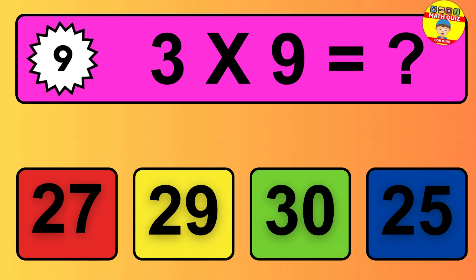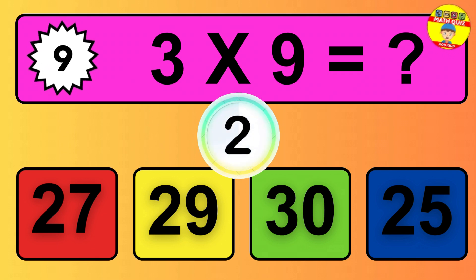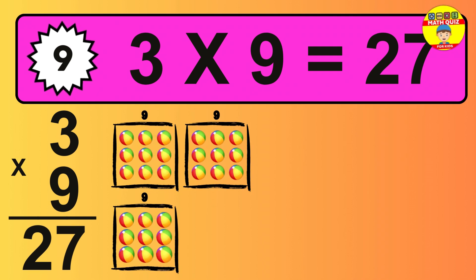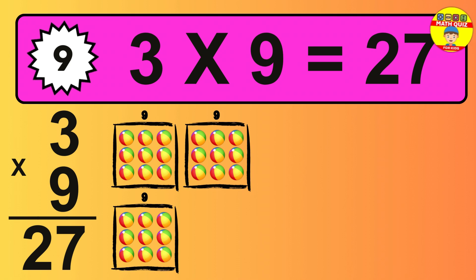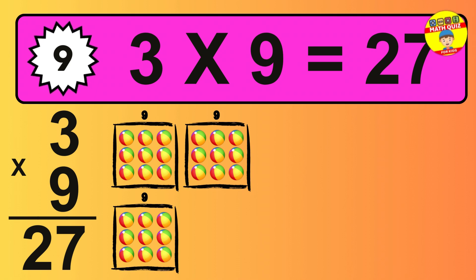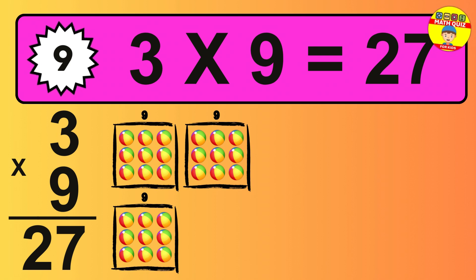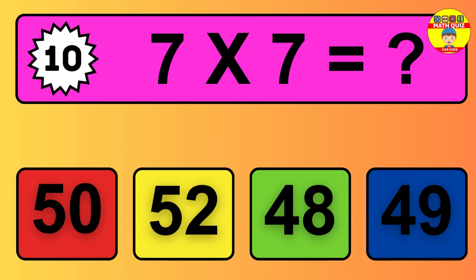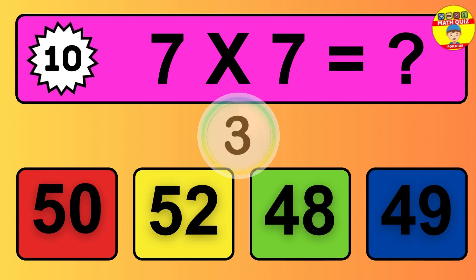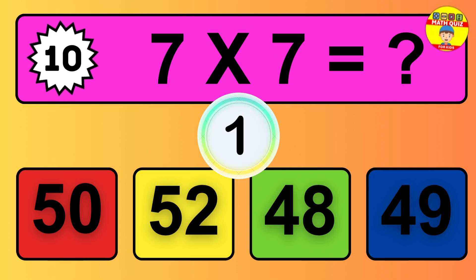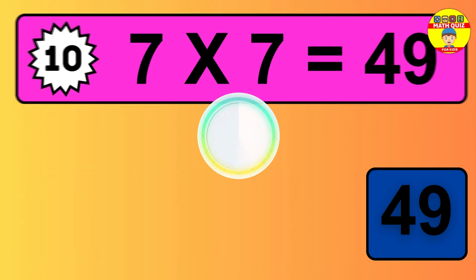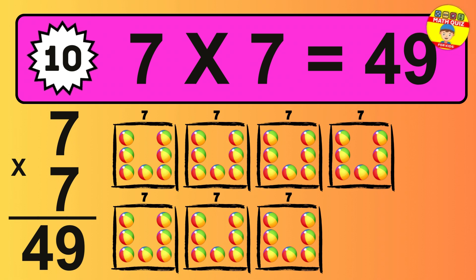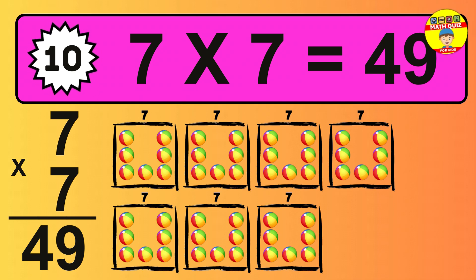Question 9. 3 times 9 equals what? The answer is 3 times 9 is 27. Question 10. 7 times 7 equals what? The answer is 7 times 7 is 49 balls.